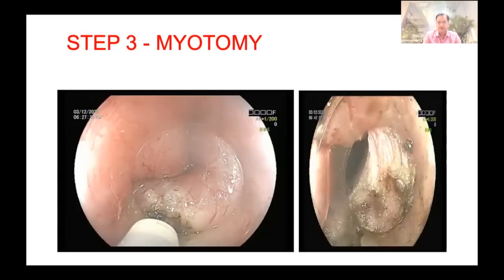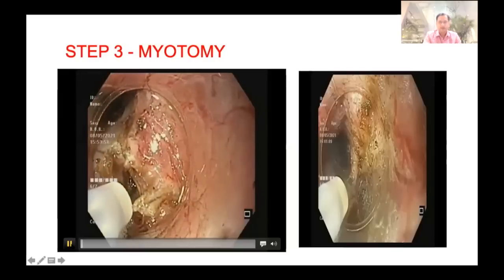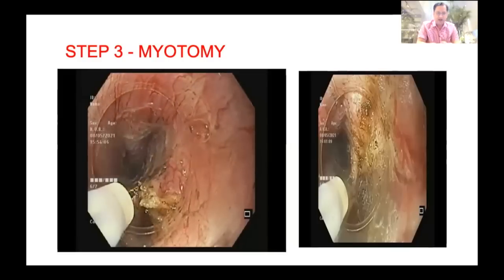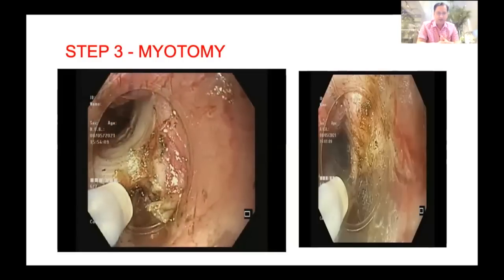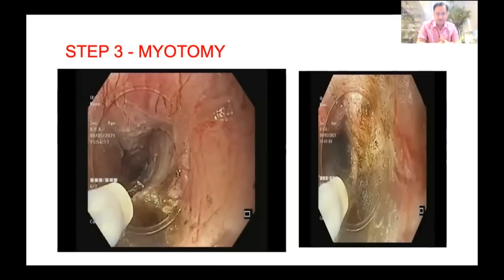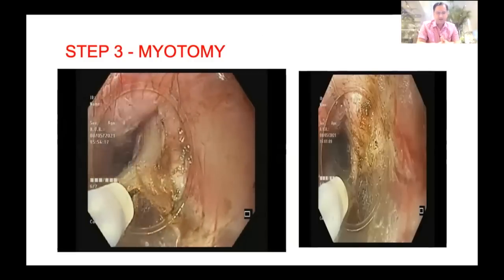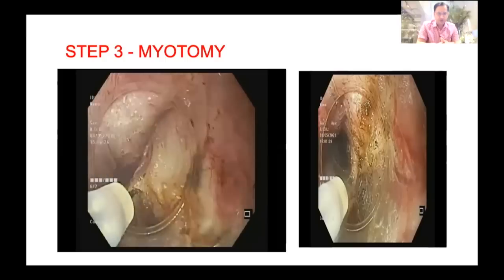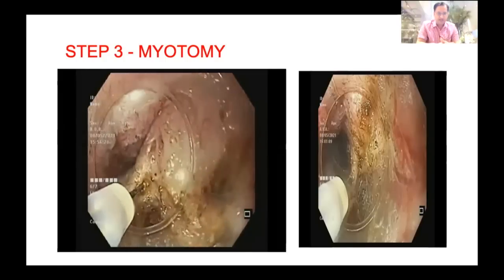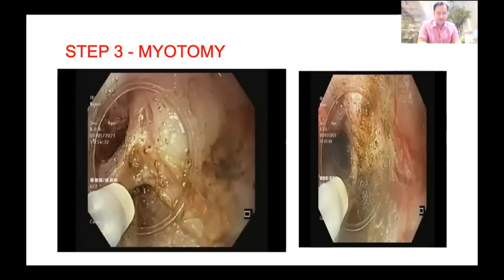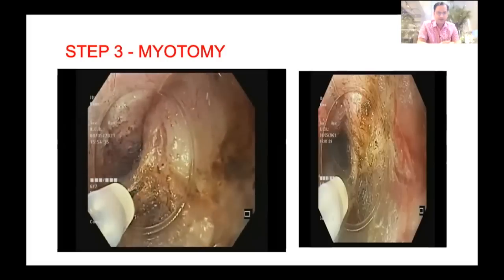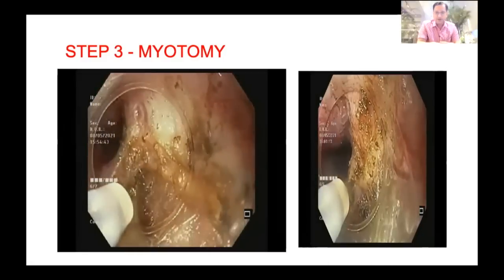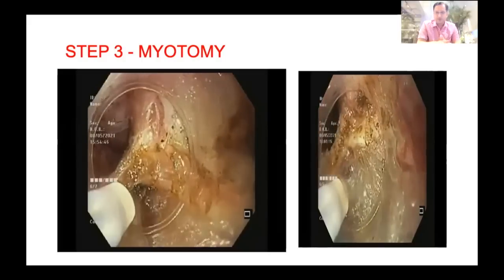I am extending this myotomy incision into the stomach. After identifying the correct plane of myotomy, the myotomy becomes very easy — just apply force with the TT knife with a few strokes of coagulation current, then cut current. Extending till the GE junction, you can see absolutely clean myotomy. Once you reach the GE junction, perform a complete myotomy using coagulation current only. You can also notice the perigastric fat.